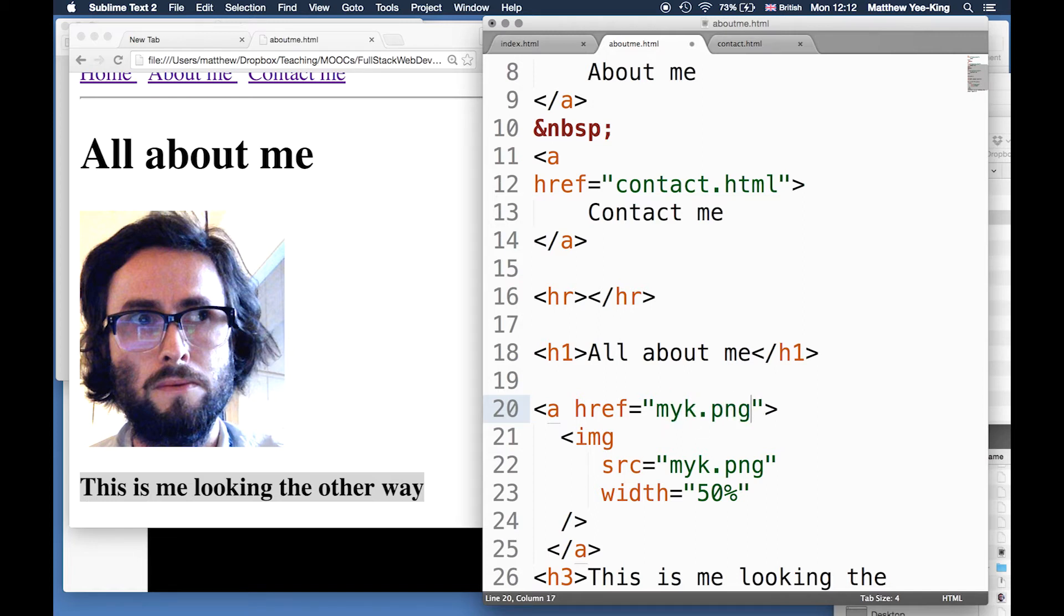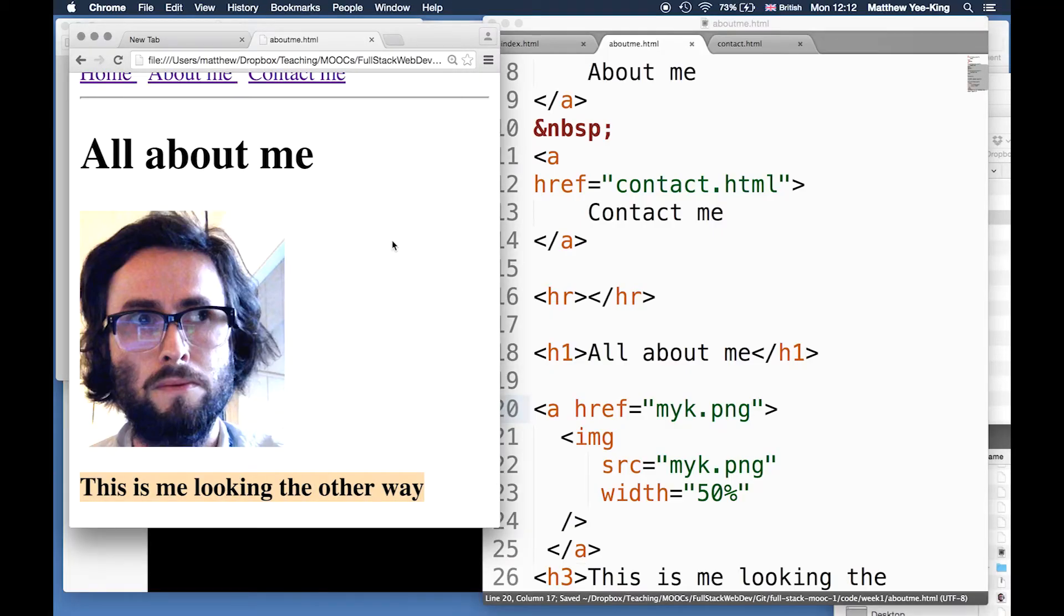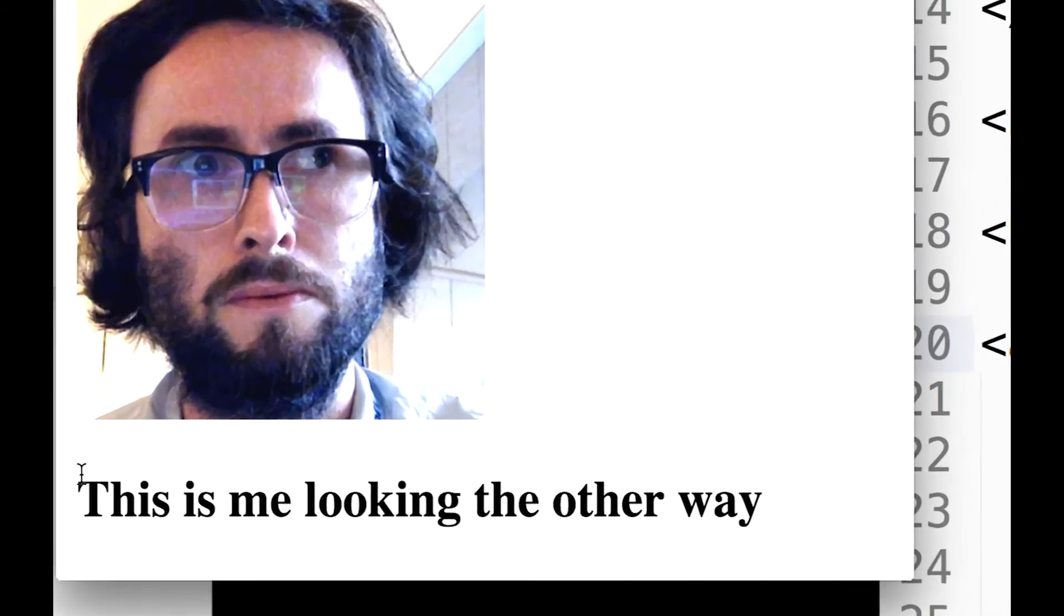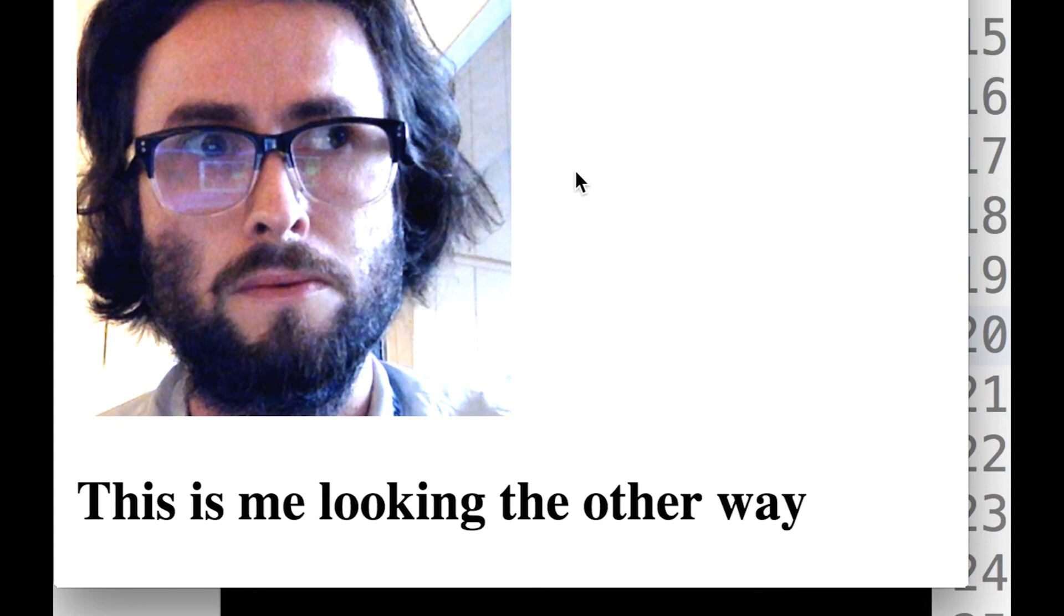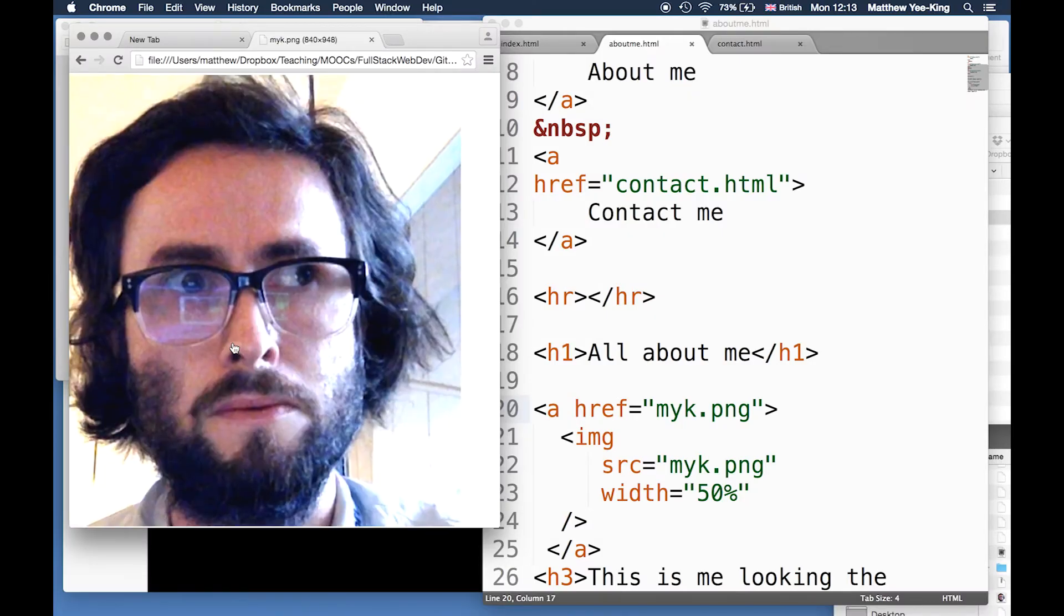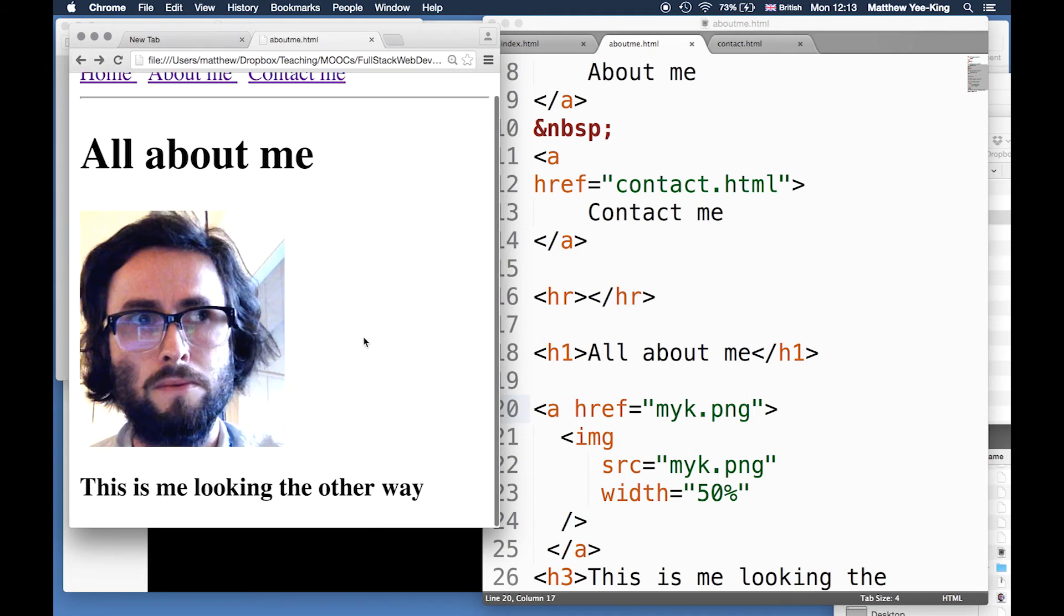Let's see what that does. That's the normal mouse pointer, and when I go over here you can see it turns into a clickable thing. At the bottom of the browser window it's popping up information about where that link is going to go. Let's click on it - you can see now it's just showing the image file, not the HTML anymore. I can use my browser back button to get back out.